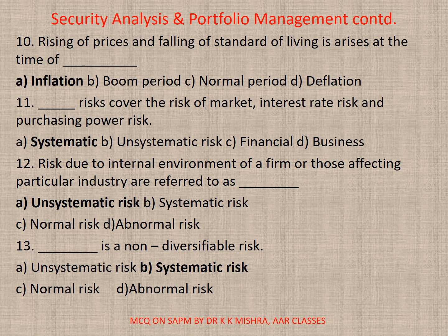Question 10: Rising of prices and falling of standard of living rises at the time of — correct option A: Inflation. Question 11: Dash risks cover the risk of market, interest rate risk, and purchasing power risk — correct option A: Systematic risk. Question 12: Risk due to internal environment of a firm or those affecting a particular industry are referred to as — correct option A: Unsystematic risk.